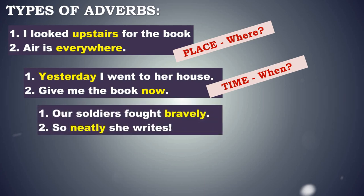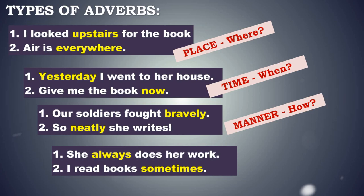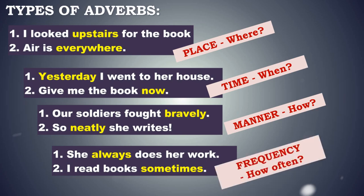Take a look at the next two sentences: Our soldiers fought bravely. Neatly she writes. These words answer the question how — they tell us about the manner in which the action is performed. This is an adverb of manner. Next: She always does her work. I read books sometimes. These words answer how often — they tell us about the frequency with which an action is performed. So these are adverbs of frequency.